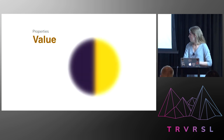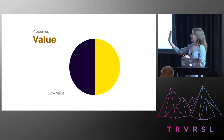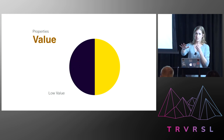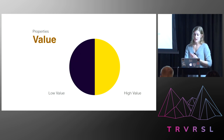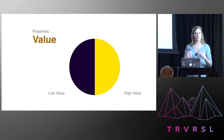Next we have value. Value describes how light or dark a color is. A low value color is absorbing more light than it is reflecting back into your eyes, so a low value color is going to be a darker color. A high value color — like yellow — reflects more light back into your eyes. Low and high value just describes the darkness or lightness of a color.